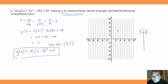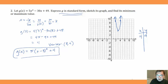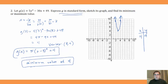We pick a point one away from the vertex: x = 4. Plugging in: 4 - 3 = 1, 1² = 1, 1 × 5 = 5, plus 4 is 9. When x = 4, y = 9. The symmetric point at x = 2 also gives y = 9. We sketch the parabola. This parabola has a minimum value of 4 — the y-coordinate of the vertex — because it opens up since a = 5 is positive.